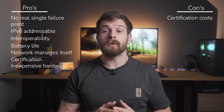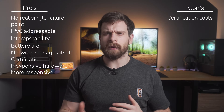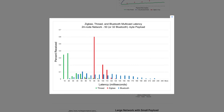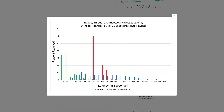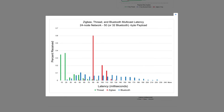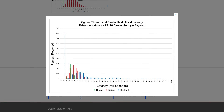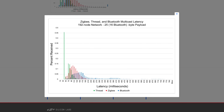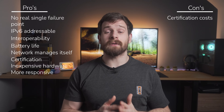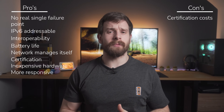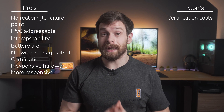Latency should also be improved with Thread. There is one good report from Silicon Labs that benchmarked Thread against Zigbee and Bluetooth, and found that Thread usually performed the best, with Zigbee a close second. In the real world it may be difficult to actually notice the difference between Zigbee and Thread, but faster response times and less variation in those response times is always better, so I welcome this improved latency.